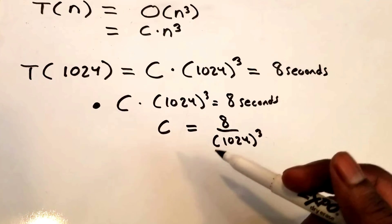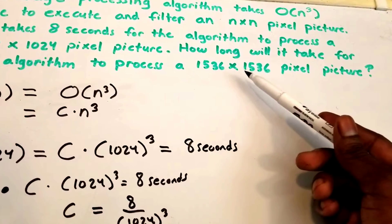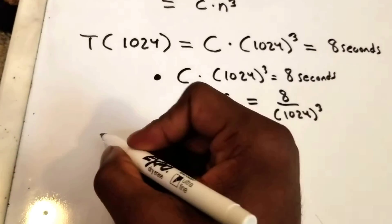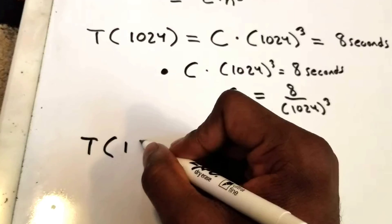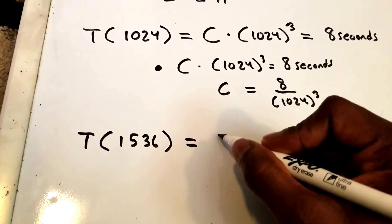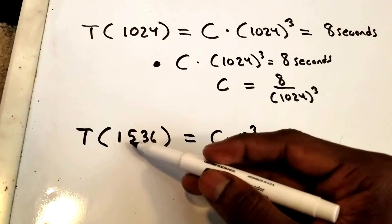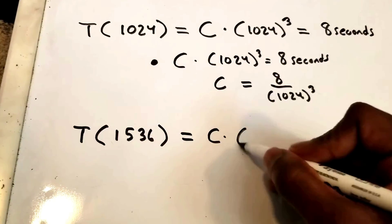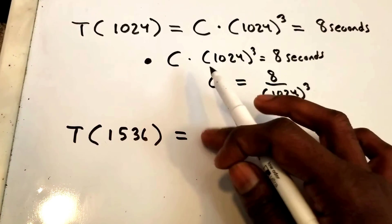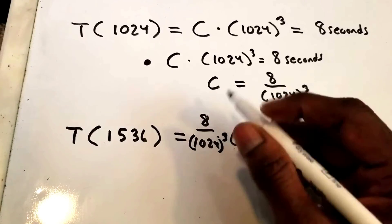We can use this to solve for any arbitrary n by n pixel picture. The problem wants us to solve for a 1536 by 1536 pixel picture. We need t(1536), which equals c × n³, where n is 1536. So we replace c with 8 divided by 1024³, and multiply by 1536³.